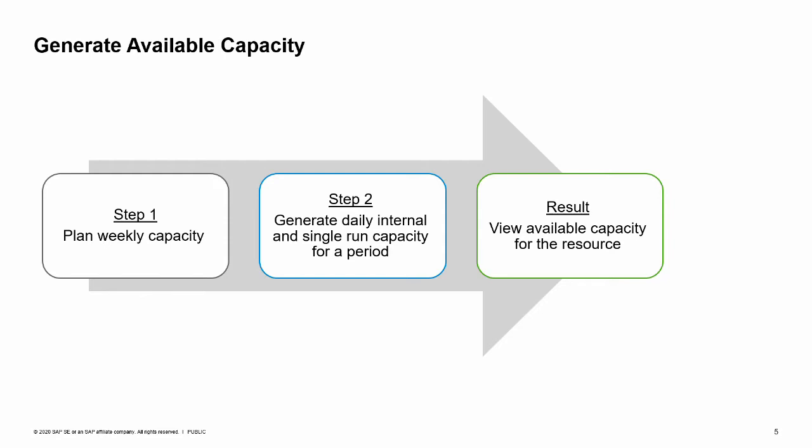Alternatively, you can set the capacity manually for each day in the period. There are two types of daily capacities that should be defined: internal and single-run capacities. A single-run capacity assumes only one production order can be produced using a certain resource in a certain period. With internal capacity, this kind of limitation is not taken into account. The result of these steps is an available capacity — internal and single-run — that allows you to manage and allocate capacities in the production process.